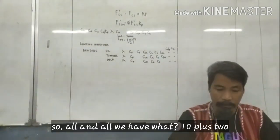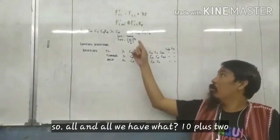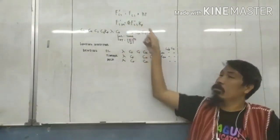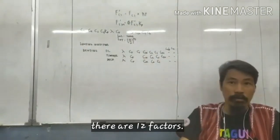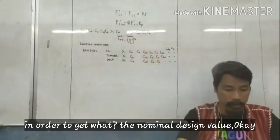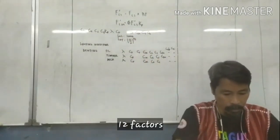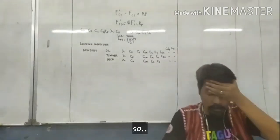Okay, all in all we have one, ten, and then plus. So there are twelve factors in order to get nominal design value. Okay, twelve factors.